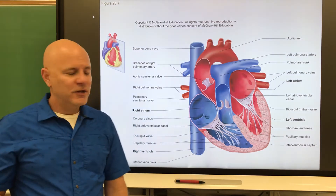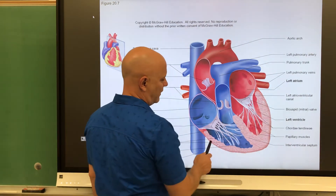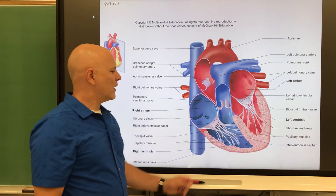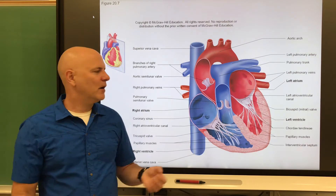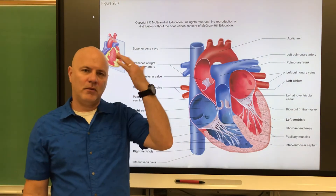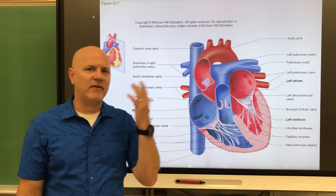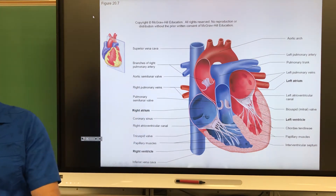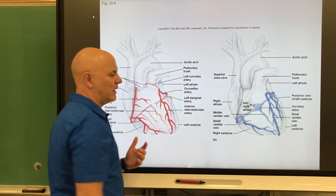The left ventricular walls are thicker than the right because the left ventricle has to do more work. The right ventricle pumps blood to the lungs, which are right next to the heart, whereas the left ventricle has to pump blood — especially when we're standing — against gravity all the way to the top of your head.